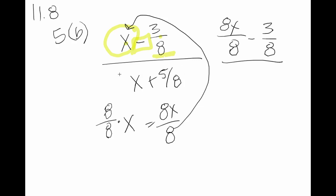So we do the same thing in the denominator. We're going to multiply this term by 8 as well because its fraction has a denominator of 8. So I end up with 8x over 8 plus 5 over 8.